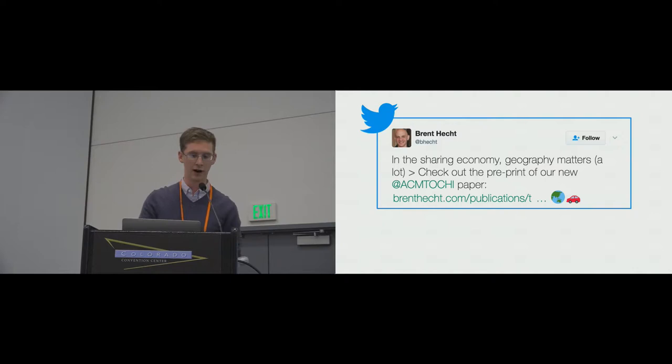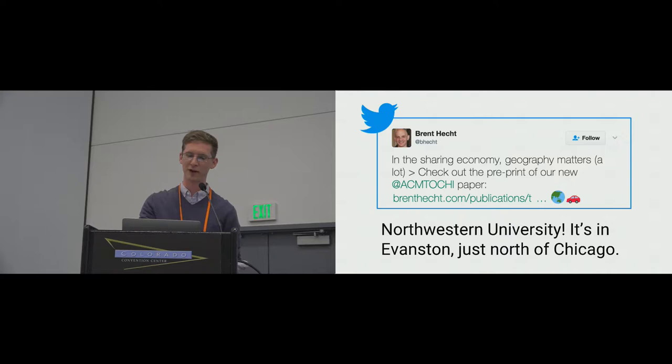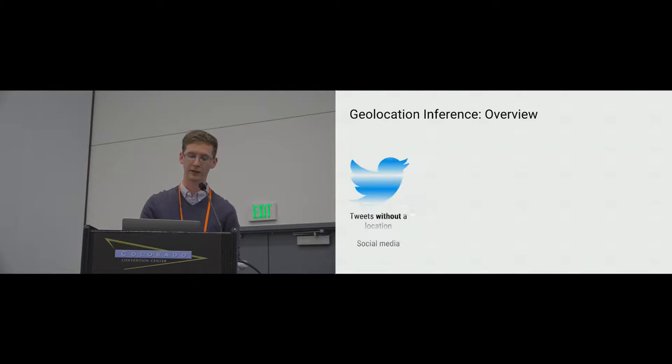Let's start with an example. This is a tweet that my advisor sent out recently. If you read this, you might see that he's doing research on the sharing economy and geography, and think this guy must have some really awesome graduate students — I sure would love to be a part of that lab. But figuring out that we're at Northwestern, which is in Evanston, Illinois, is a bit more challenging for algorithms.